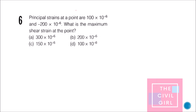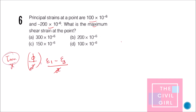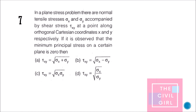Question 6: The principal strains at a point are given — find the maximum shear strain. The difference between maximum shear stress and maximum shear strain is the formula used. The calculation gives 100 minus (minus 200), so the answer is 300 × 10⁻⁶.